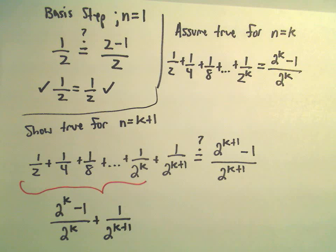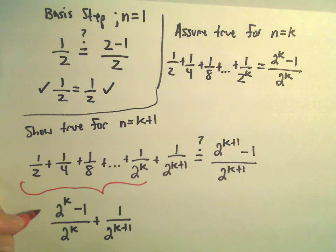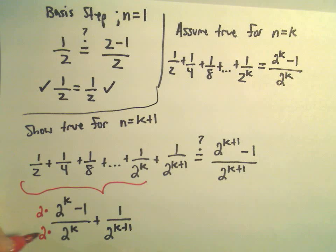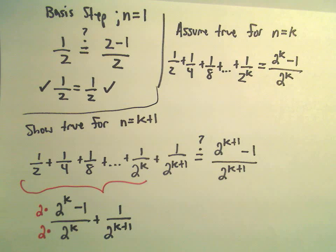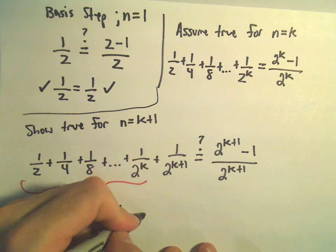Now, at this point, I could get common denominators, and that's what I'm going to do. I'm going to multiply top and bottom of my first fraction by 2. So if I do that, in the numerator,